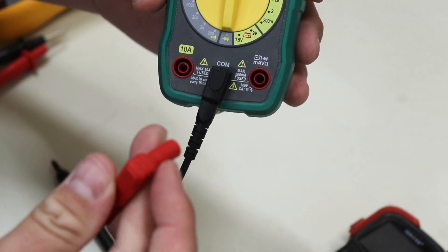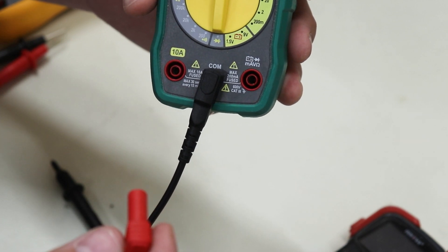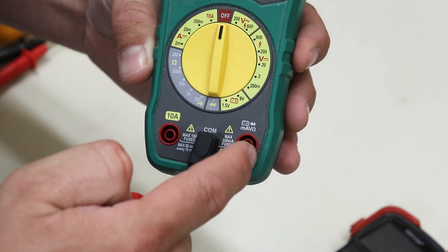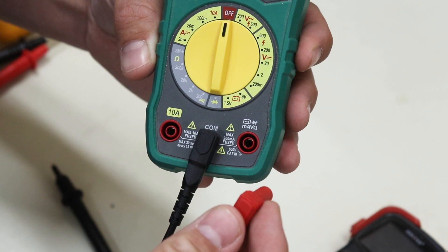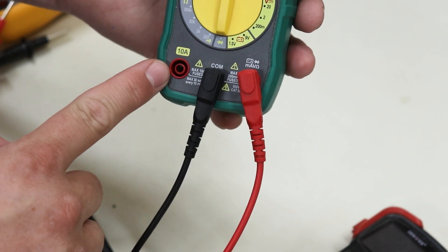Now you'll notice that there are actually two options for the red probe and this is where some people get tripped up. For most measurements, you're going to want to use the general purpose plug, which is usually on the right side. The left hand side is used to measure higher currents and we'll get to that in a minute. Before you can take a measurement, you need to know which type of electricity you're working with, alternating current or direct current.